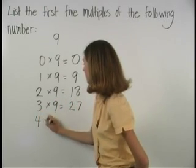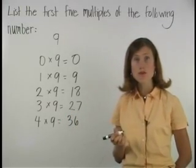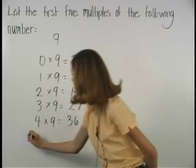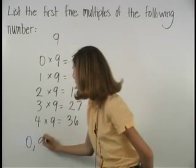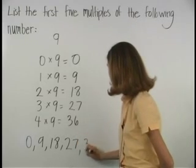And four times nine, which is thirty-six. So the first five multiples of nine are zero, nine, eighteen, twenty-seven, and thirty-six.